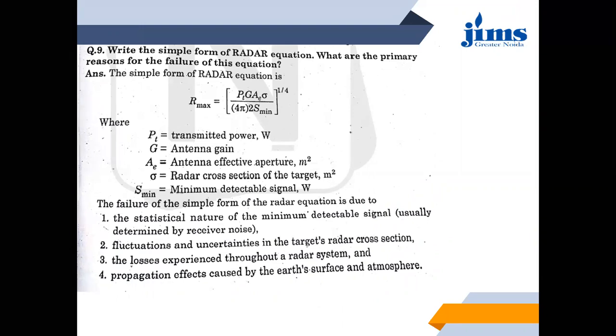The radar range equation you studied in Unit 1 is given as R_max equal to the fourth root of P_t G A_e sigma divided by 4 pi squared times S_min, where P_t is the transmitted power in watts, G is the antenna gain, A_e is the antenna effective aperture in meter squared, and sigma is the radar cross section of the target in meter squared.